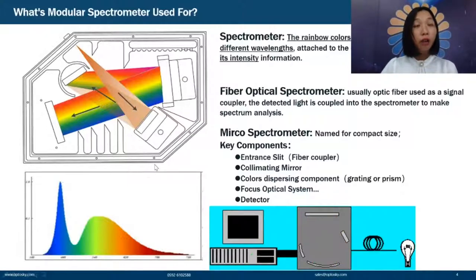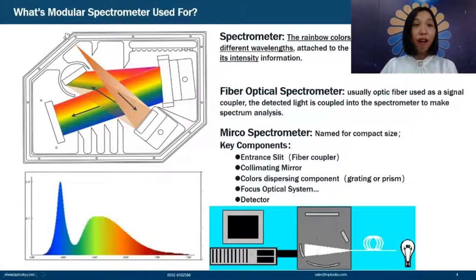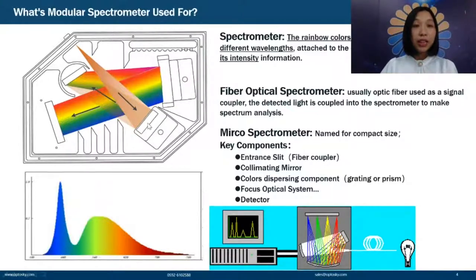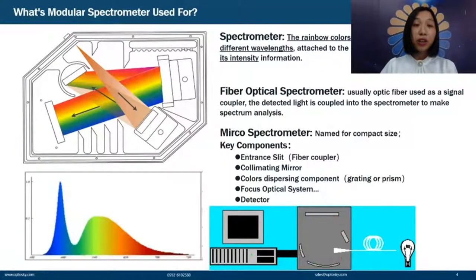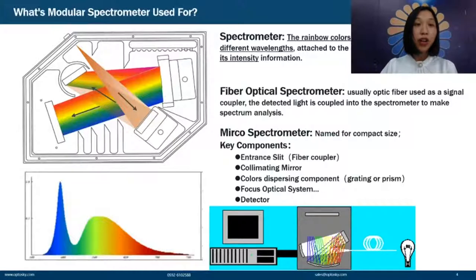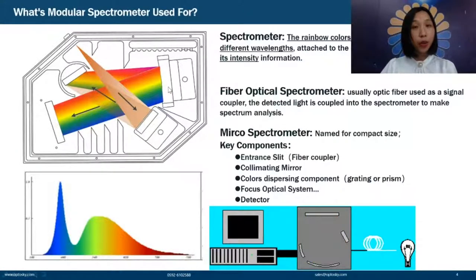What are the principles of a modular spectrometer? Light shoots in and passes through a slit, which forms a parallel beam. The grating then disperses the light. A focus mirror directs the dispersed light to the detector, which transforms the optical signals into electrical signals. This is the general working principle of a modular spectrometer.